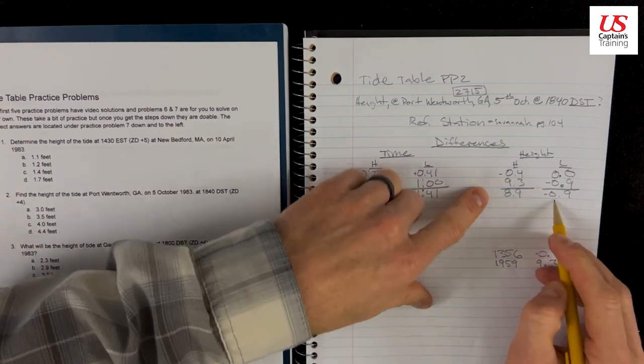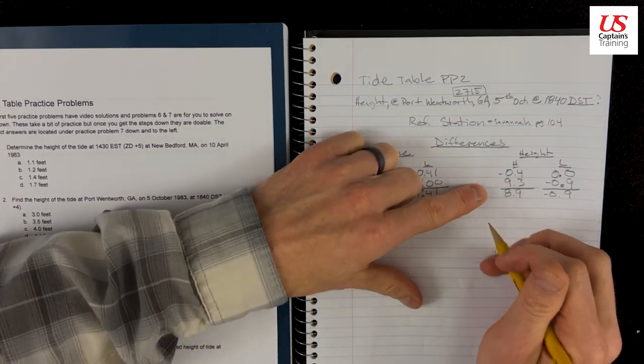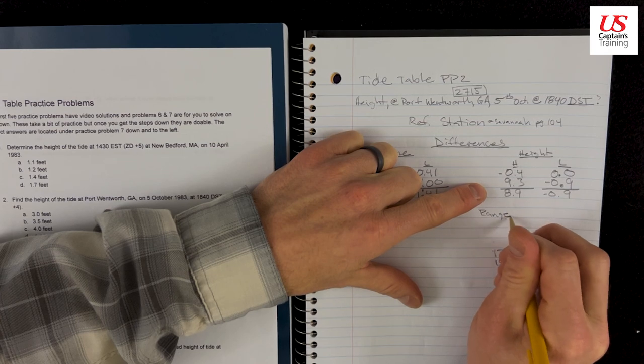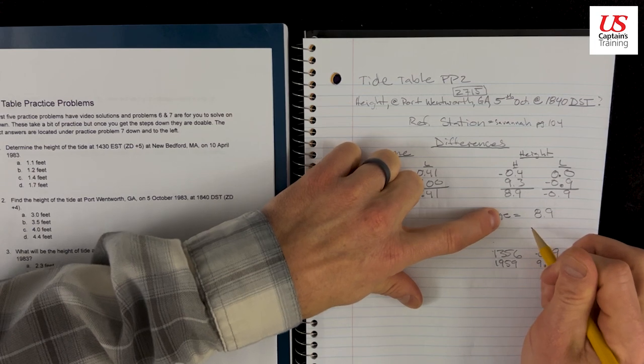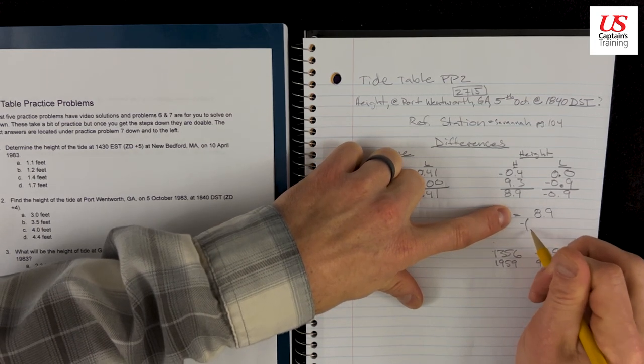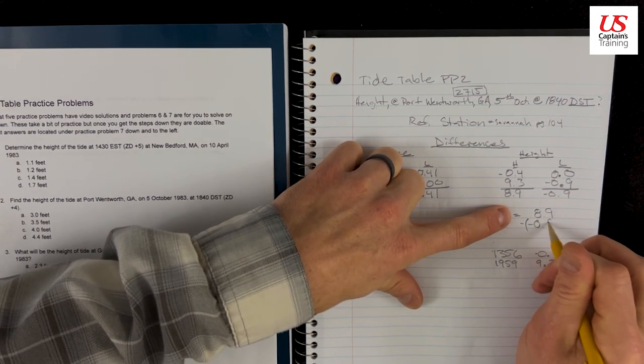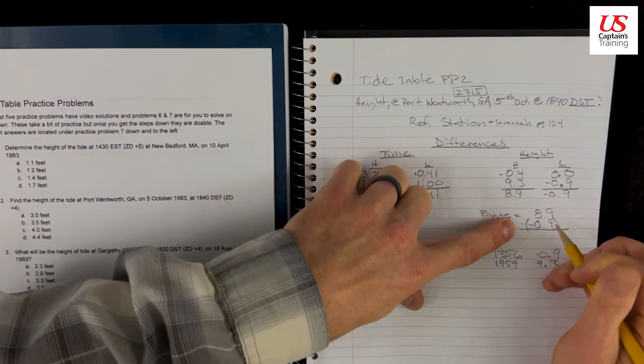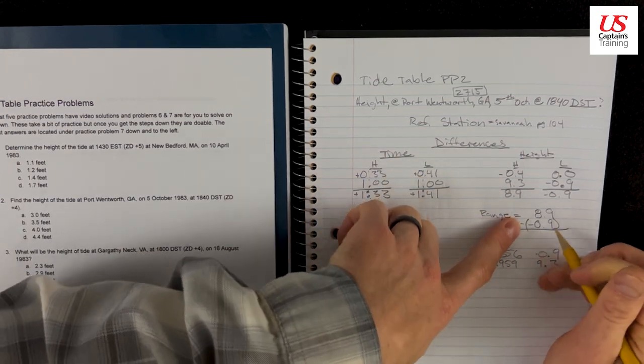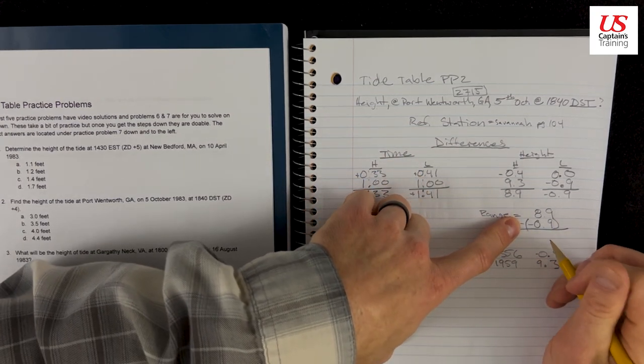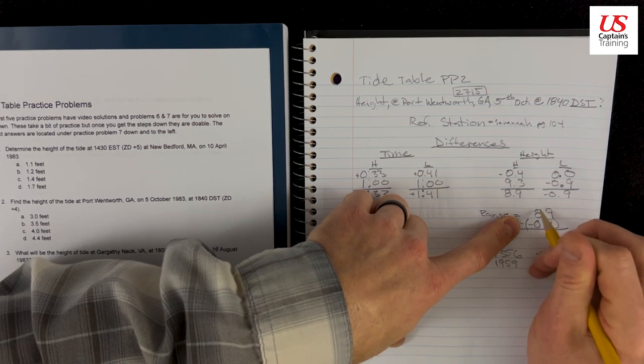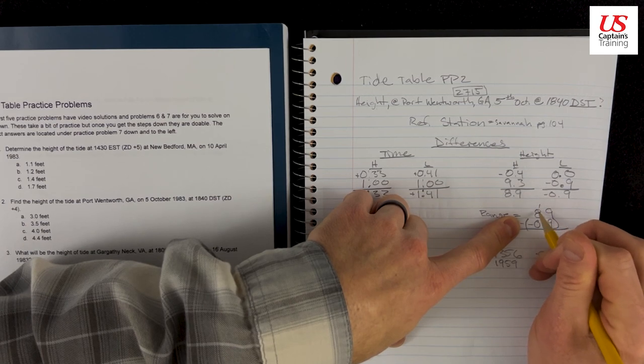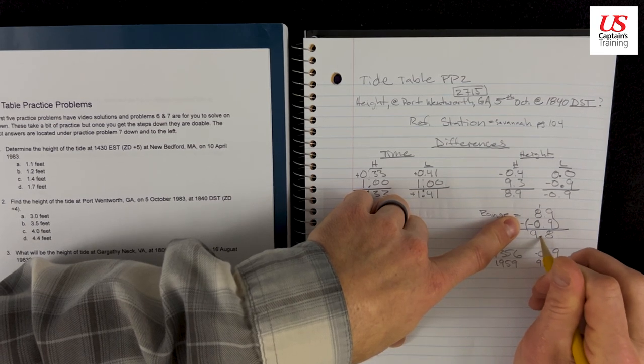So we have these height corrections. We need to find the range. The range of this tide equals 8.9 minus a negative 0.9. So if we subtract a negative, we add it. And I'll show you on a number line. But let's just add these. 9 plus 9 is 18. 1 plus 8 is 9. 9.8.